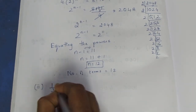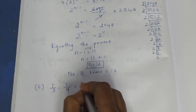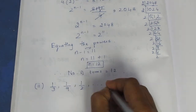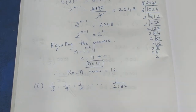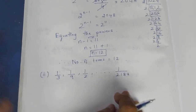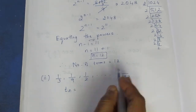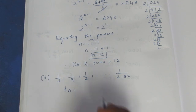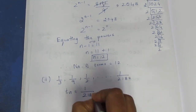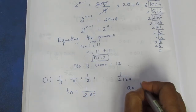The second problem: 1/3, 1/9, 1/27, up to 1/2187. We know the last term Tn equals 1/2187. Let's find the number of terms. If we say a, the first term is 1/3.